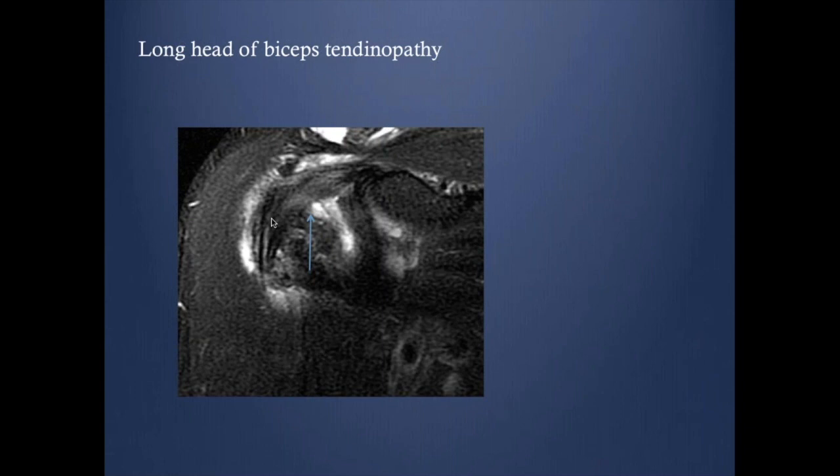You have to look at all three sequences. In some patients you can see it best in coronal, in some patients best in sagittal, and in some patients best in the axial images. The most important thing is knowing your anatomy — knowing where it should be.